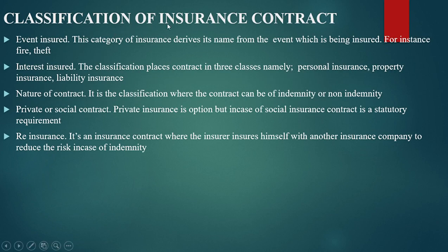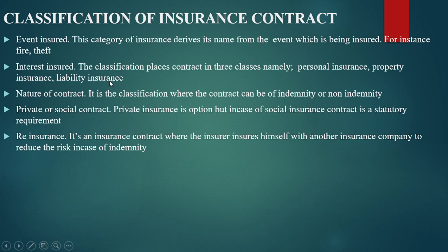There are various classifications of insurance contracts. One is by event insured: this is a category that derives its name from the event being insured, for instance fire insurance, theft insurance, and marine insurance. Another is by interest insured: placed in three classes — personal insurance, property insurance, and liability insurance. Another is by nature of insurance: the contract can be of indemnity or non-indemnity. An indemnity contract is based on insuring speculative risk, while a non-indemnity contract involves insuring an interest that may occur in future.